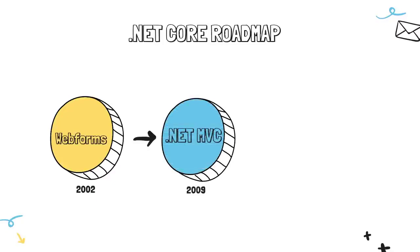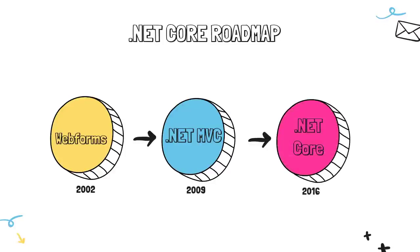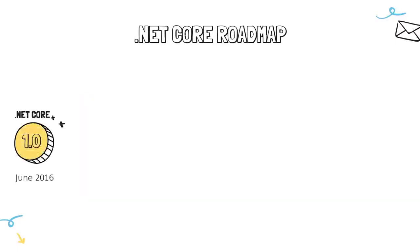Even though MVC was widely used, it had its flaws — it was built on top of Web Forms components, which tied it to IIS and ultimately the Windows operating system. With the evolution of web development, Microsoft had to keep up with changing technology. Finally, in June 2016, Microsoft released ASP.NET Core version 1. .NET Core is completely rewritten, built on top of the new .NET Core framework, and is a cross-platform version — not tied to Windows.